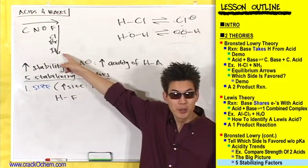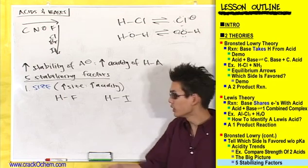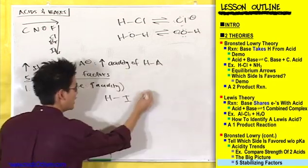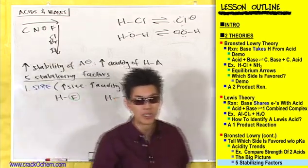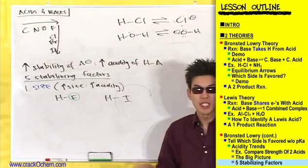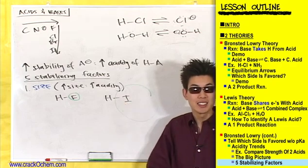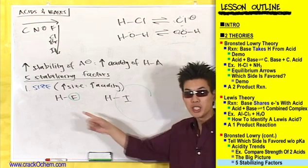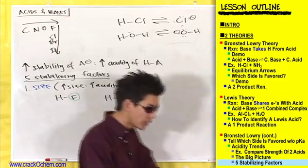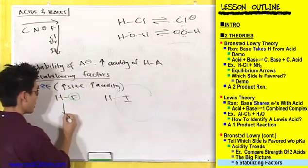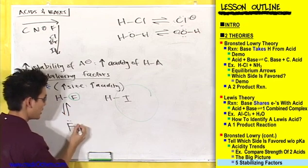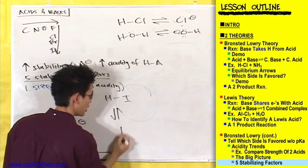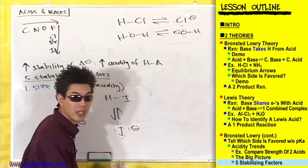Iodine, right? It's all the way down here on the periodic table. Fluorine is puny compared to iodine. So if you threw these in as acids into a Brønsted-Lowry acid-base reaction, these two acids are going to turn into their conjugate bases — HF into F minus, and HI into I minus.